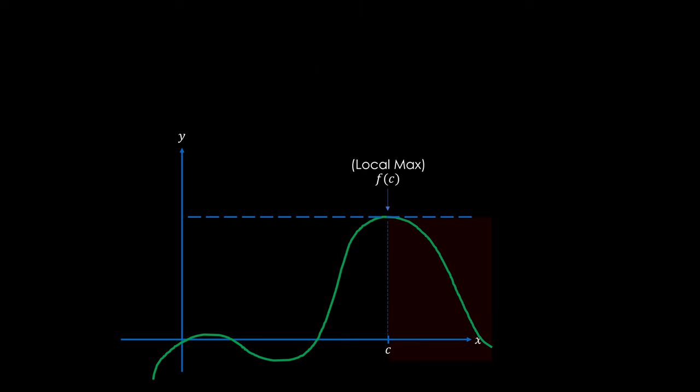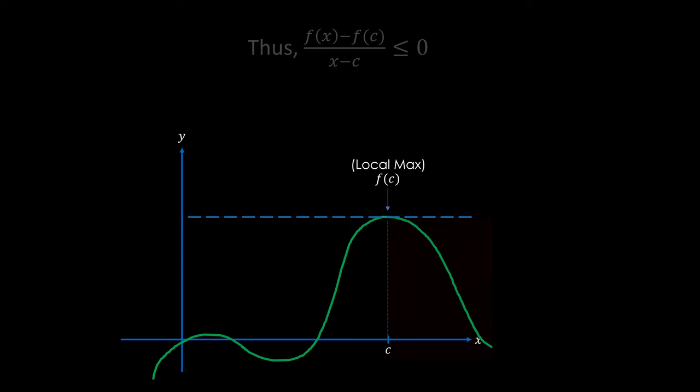Just as we did in step 3, we can say that for x near c but greater than c, x minus c is greater than or equal to 0. And just like before, if we take the fraction of these two inequalities, f of x minus f of c over x minus c must be smaller than or equal to 0.